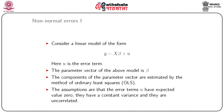We will consider a linear model of the form y equals x beta plus u. This is a standard form where y is the dependent variable, x is the matrix of independent variables, beta is the vector of parameters, and u is the error term. The components of the parameter vector are estimated by the method of ordinary least squares when the linear model satisfies all the required assumptions.